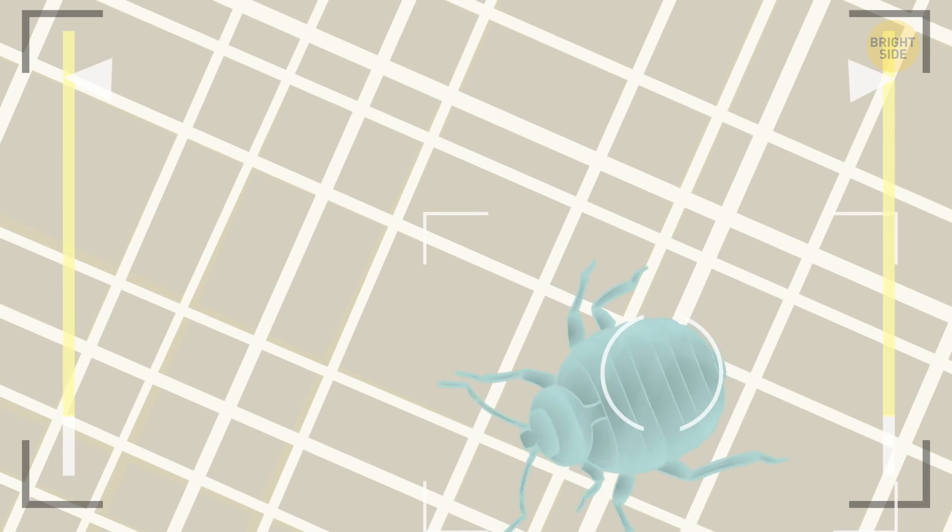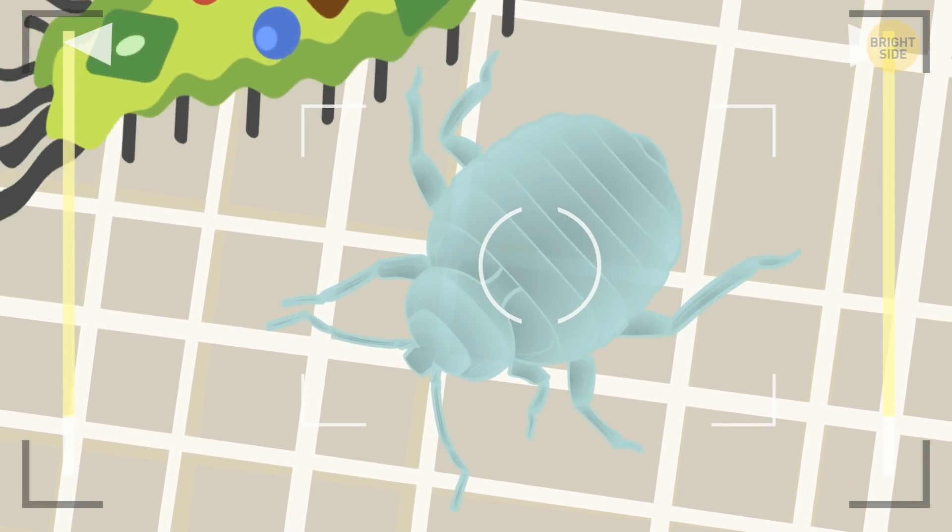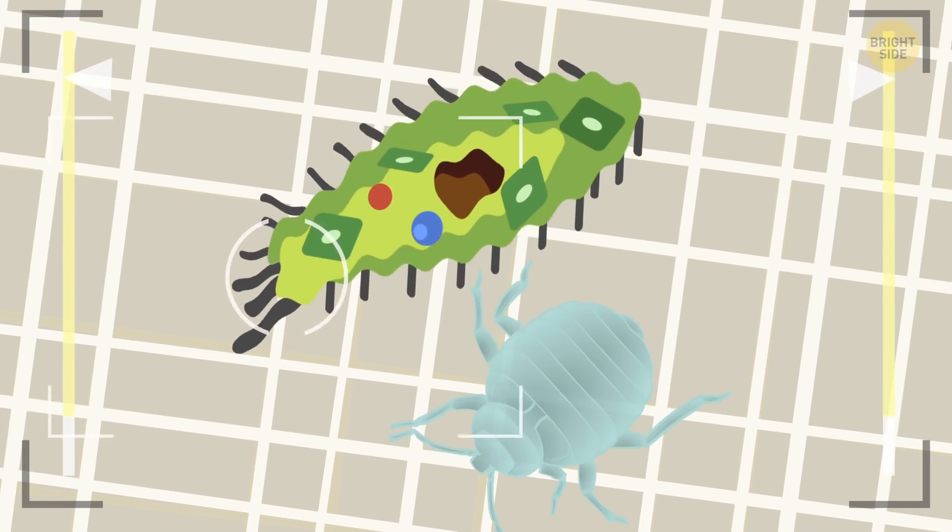By the way, remember those amoebas from your biology classes? Well, they're the same size, or sometimes even twice as big as dust mites. For a single-cell organism, that's huge!